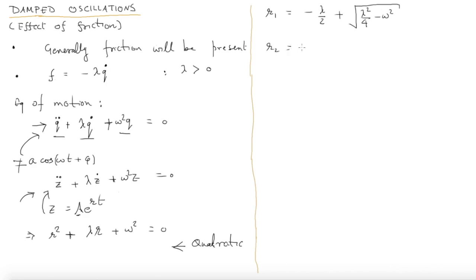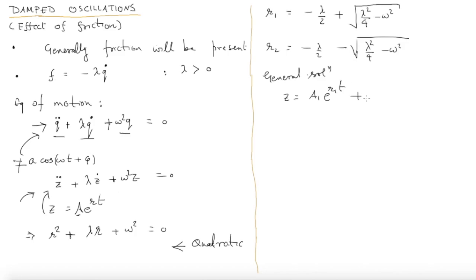The two roots are r₁ = −λ/2 + √(λ²/4 − ω²) and r₂ = −λ/2 − √(λ²/4 − ω²). The general solution is z = a₁·e^(r₁t) + a₂·e^(r₂t), where a₁ and a₂ are complex constants, and to get q we take the real part. There are three possibilities: the argument of the square root could be positive, negative, or zero — let us look at these three possibilities in turn.